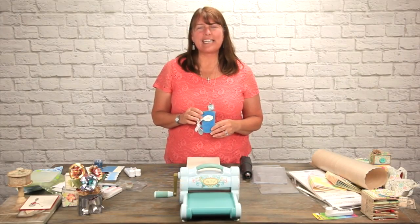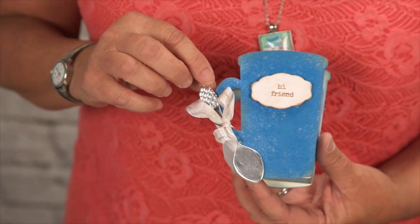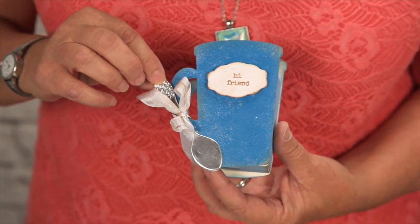Hi, my name is Eileen Hull and I'm a licensed artist with Sizzix. This is one of my new dies in the collection from Vintage Kitchen. It's the 3D mug. So we're going to learn how to use embossing powder to create a faux enamel wear look and also how to make this cute little metal spoon.